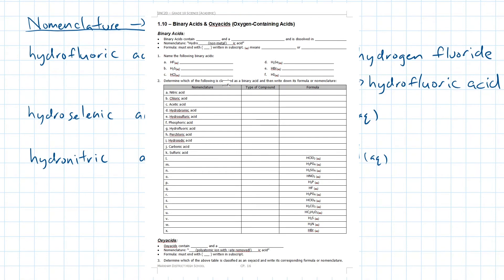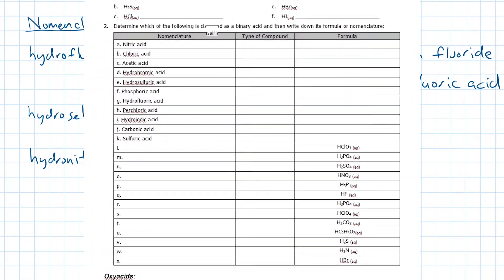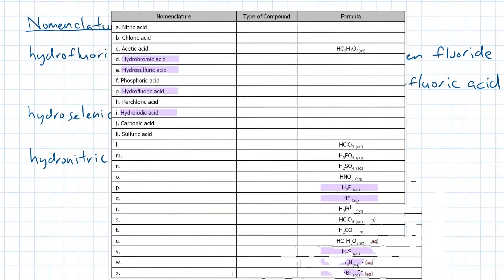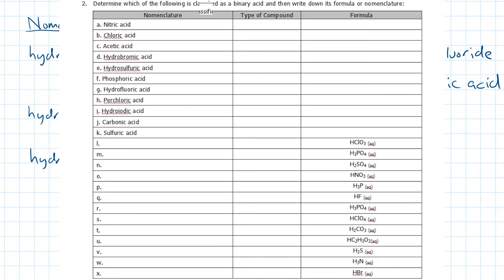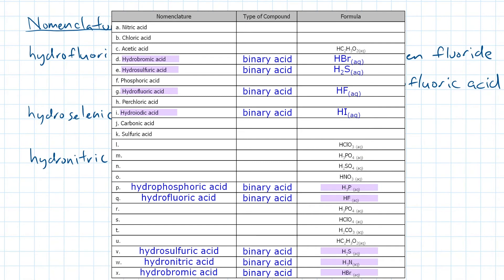Let's take a look at the worksheet. Please pause the video and highlight only the compounds that are binary acids, and write down the corresponding formula or nomenclature. Ready for the answers? Pause the video again and compare your answers with the answer key. Did you get them all right? Good job.